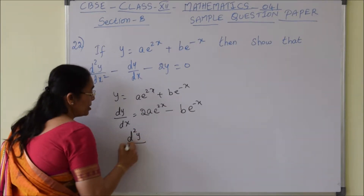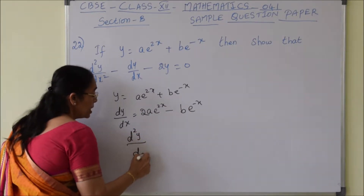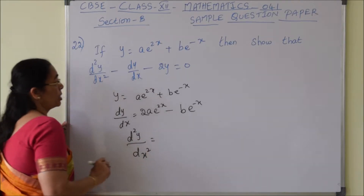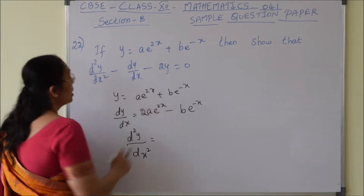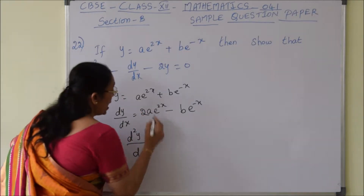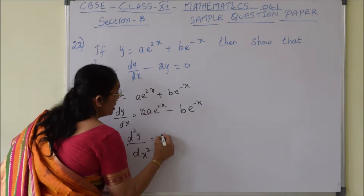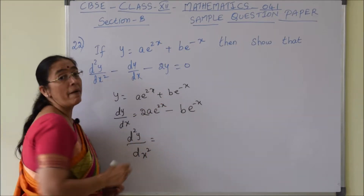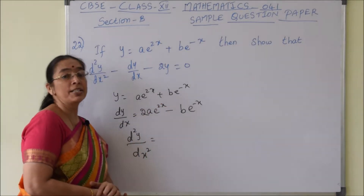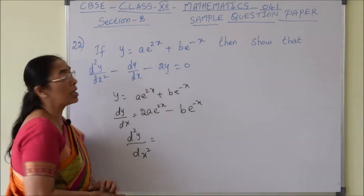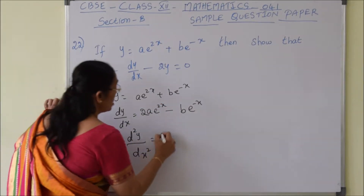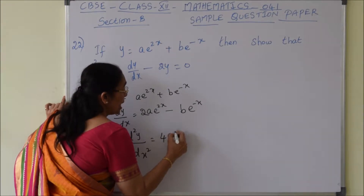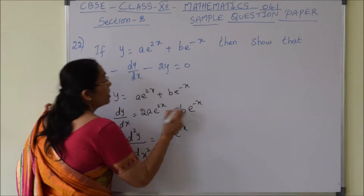Now let us do the second differentiation. d²y/dx²: 2a is constant, so 2a into e^(2x) differentiation is 2e^(2x), which gives 4ae^(2x).